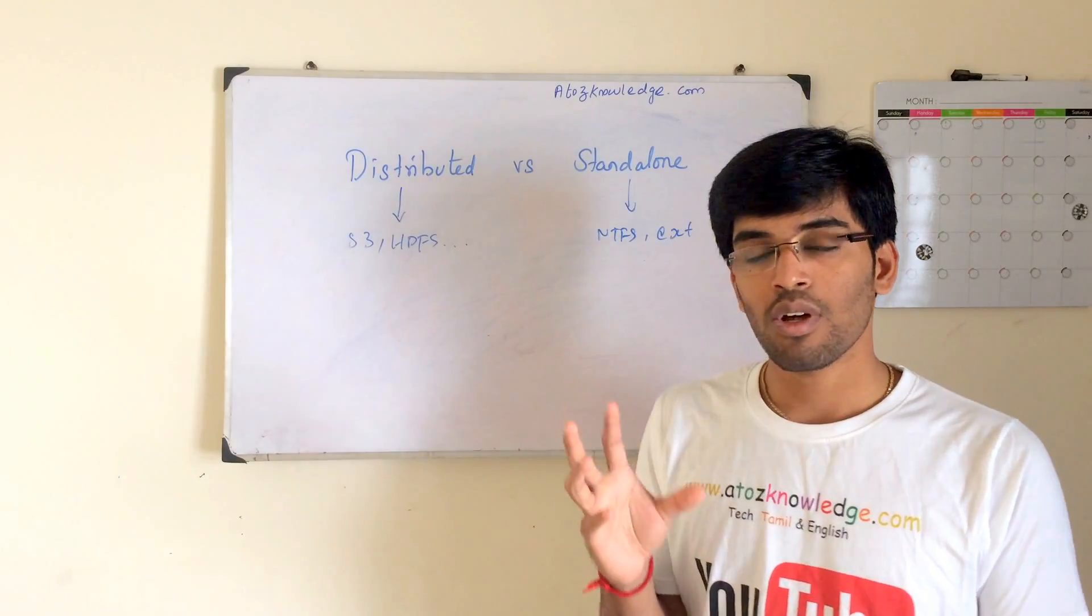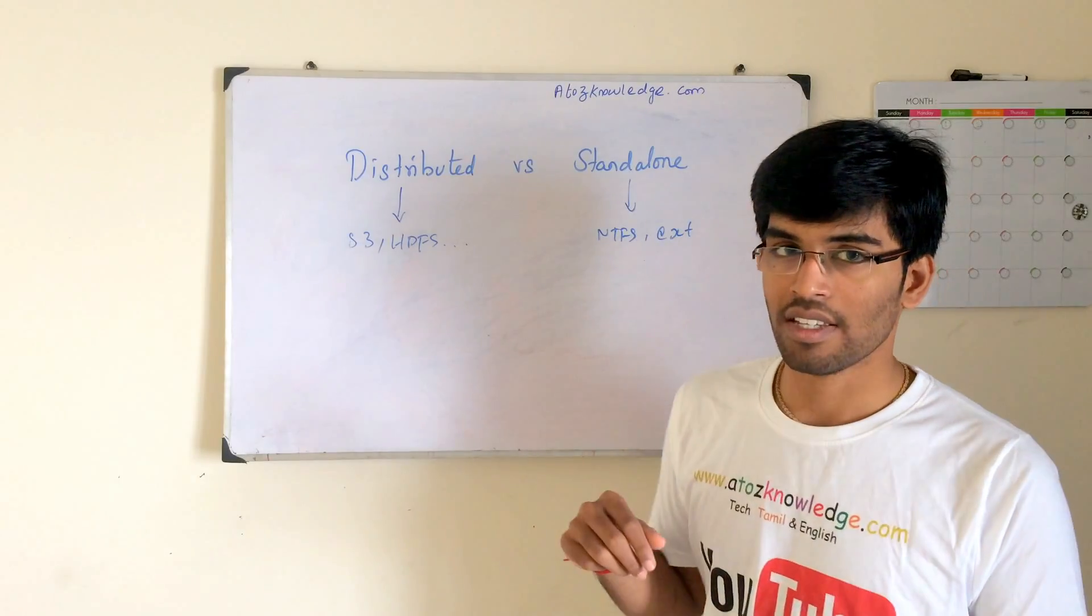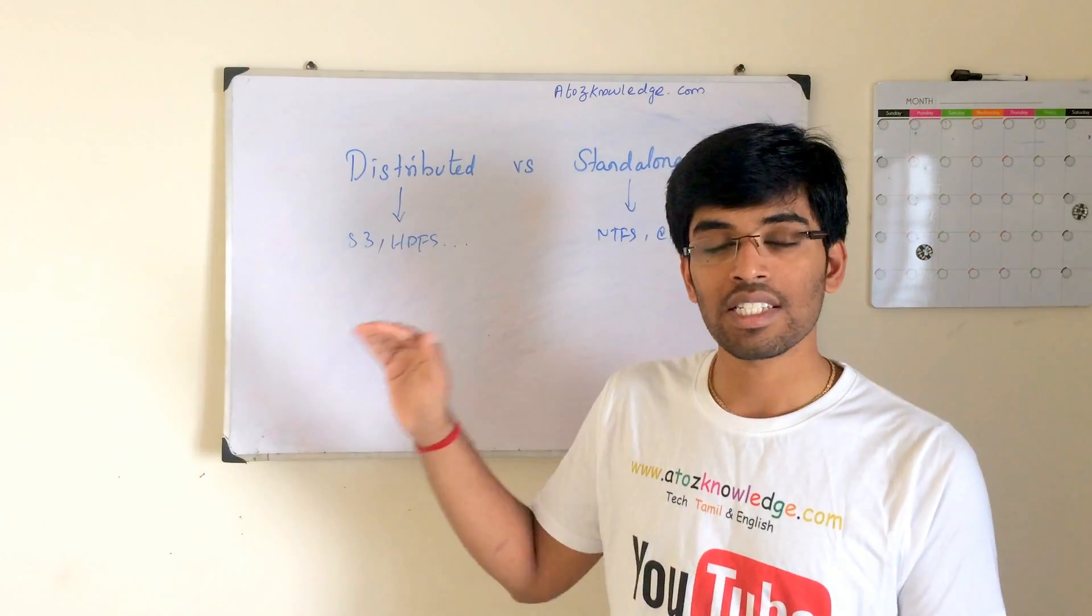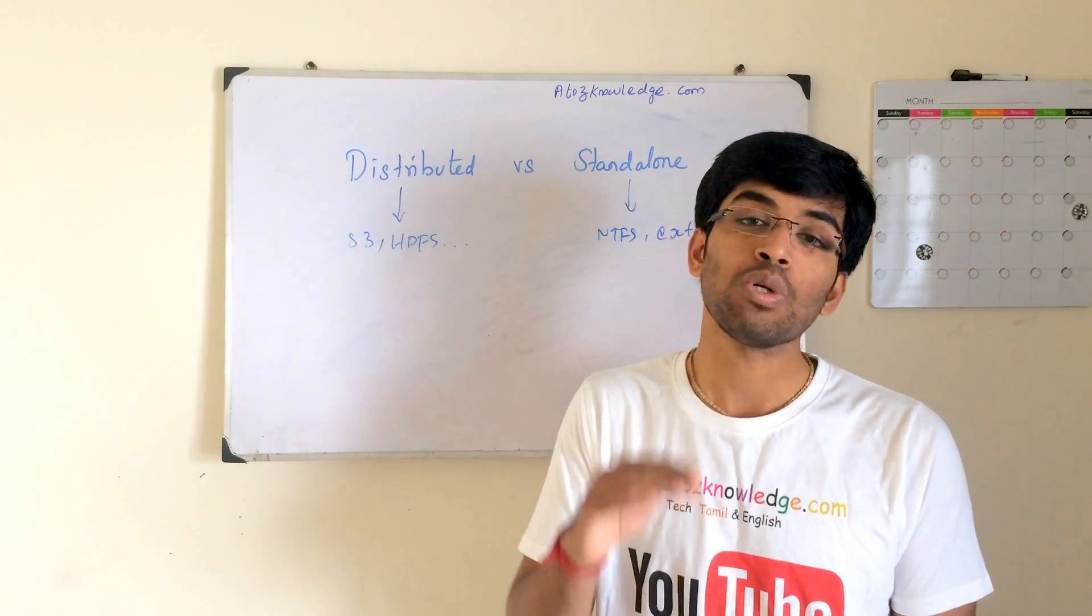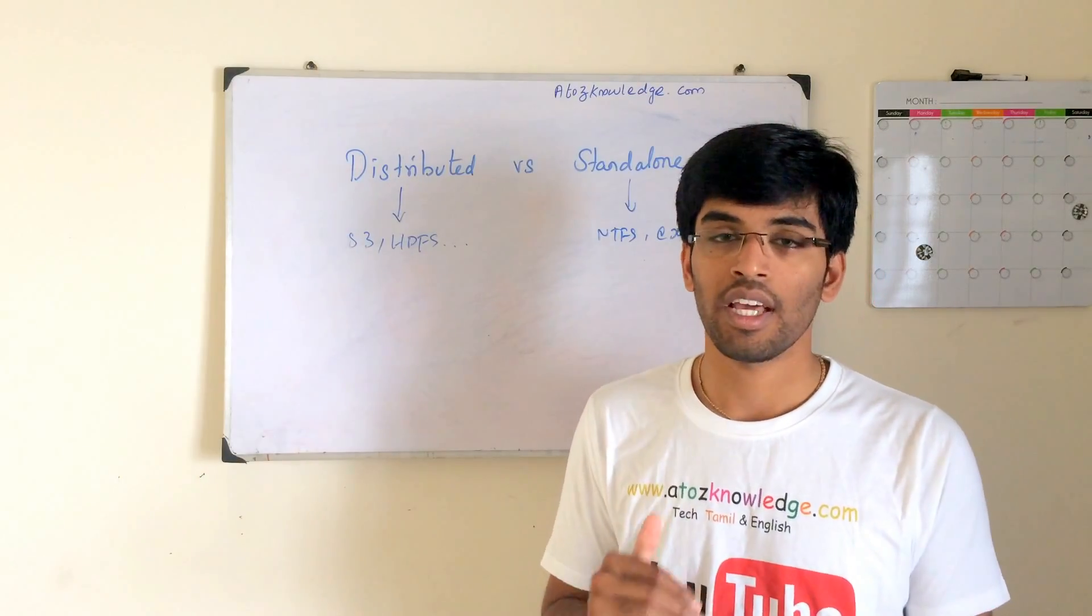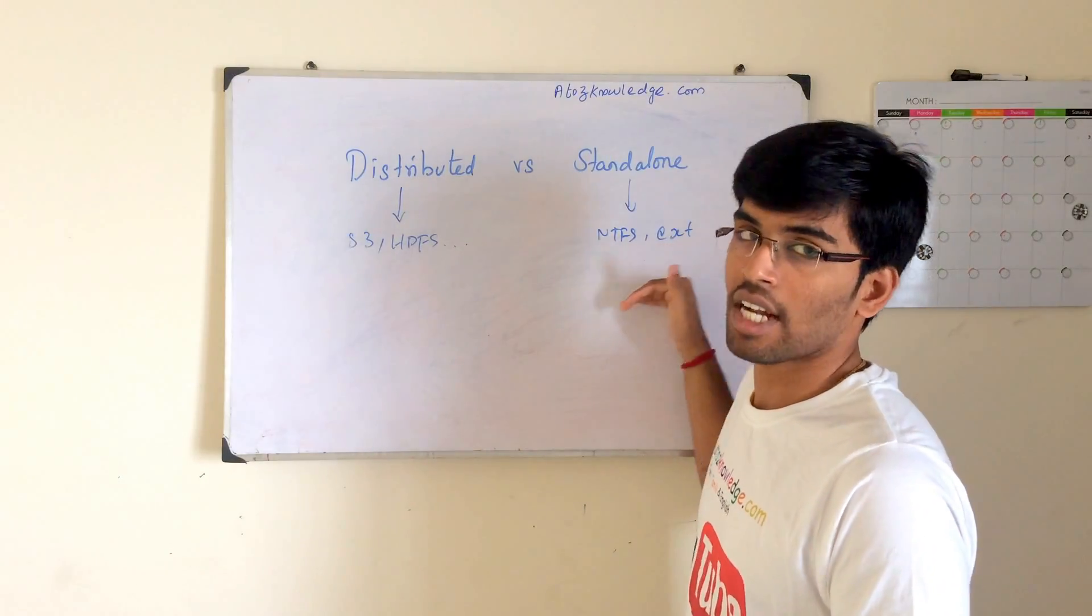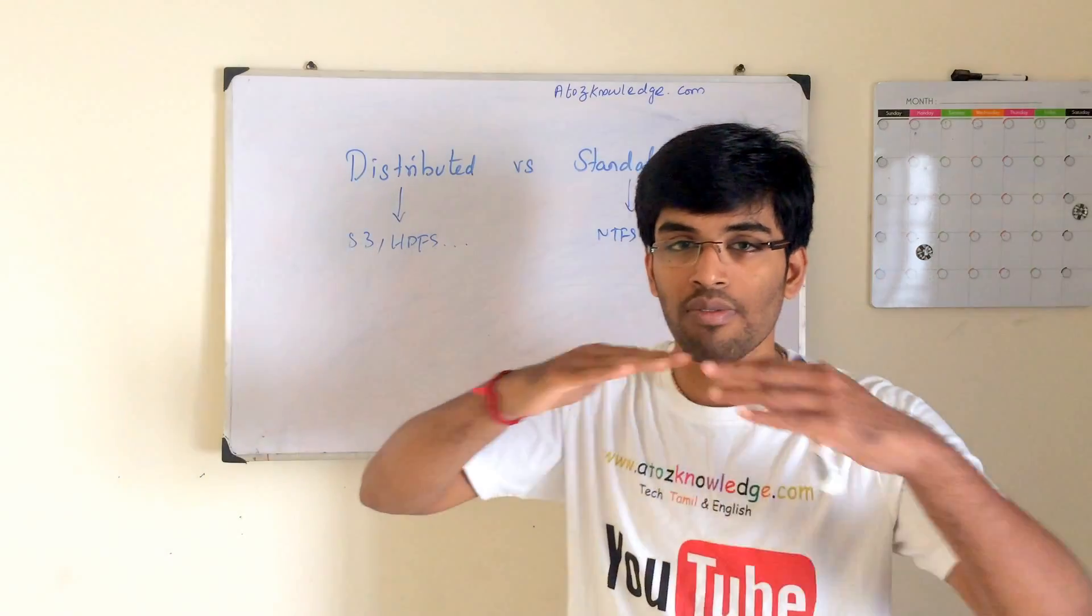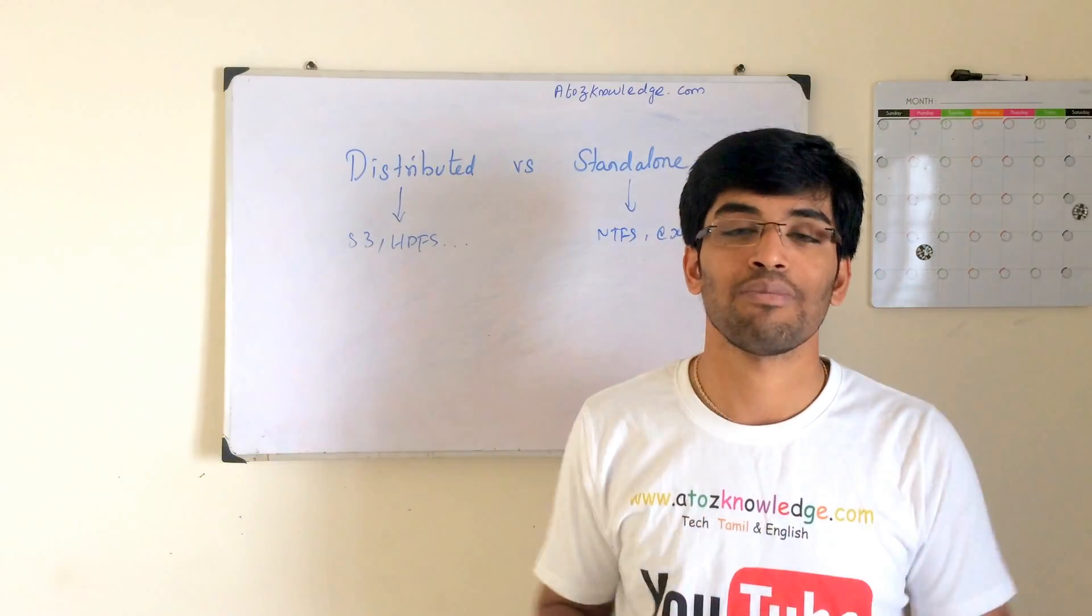And one more thing, when I install Windows operating system and Linux operating system, I will get NTFS and EXT. But these file systems are not like that because for installing any distributed file systems in your environment, you need a native OS. When I say native OS, some standalone operating system is needed. Either you have to install NTFS or EXT or any other standalone file system first. On top of it, you have to create the distributed file system environment because distributed file system is a virtual one, even though you have physical machines.